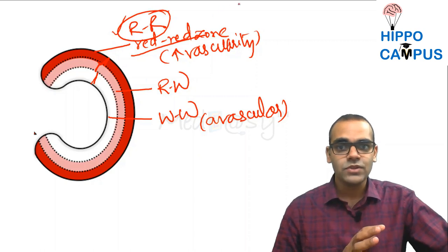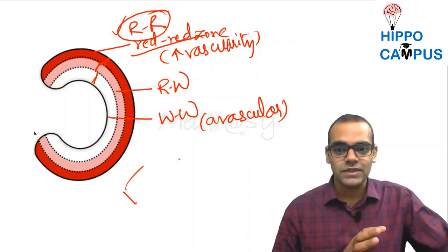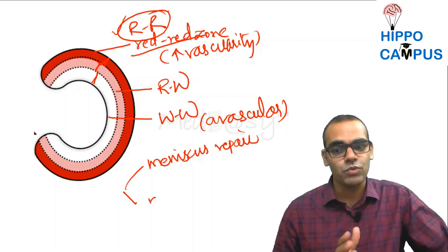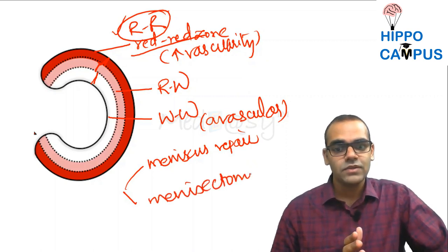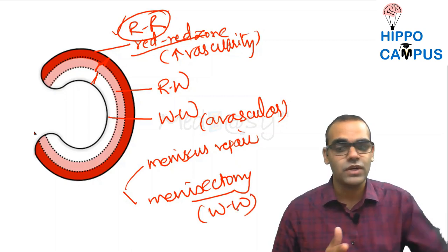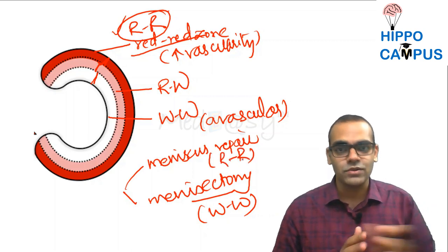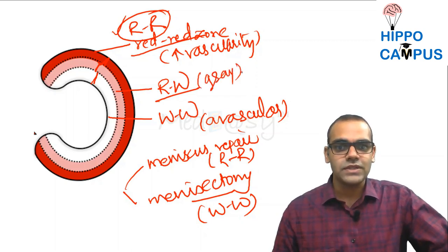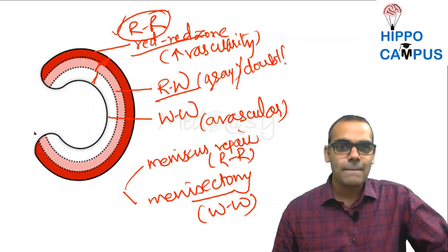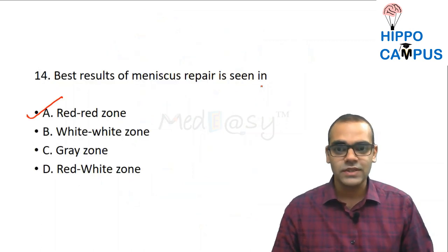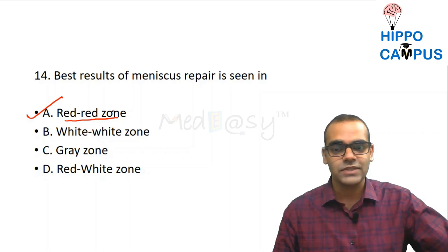The two treatments for meniscus injury are meniscus repair and meniscectomy (removal). In the white-white zone there is no chance of repair because the tissue is avascular, so meniscectomy is done. Meniscus repair is most successful in the red-red zone. The red-white zone is considered a gray zone — repair or meniscectomy depending on surgeon preference. So the answer is the red-red zone because of maximum vascularity.